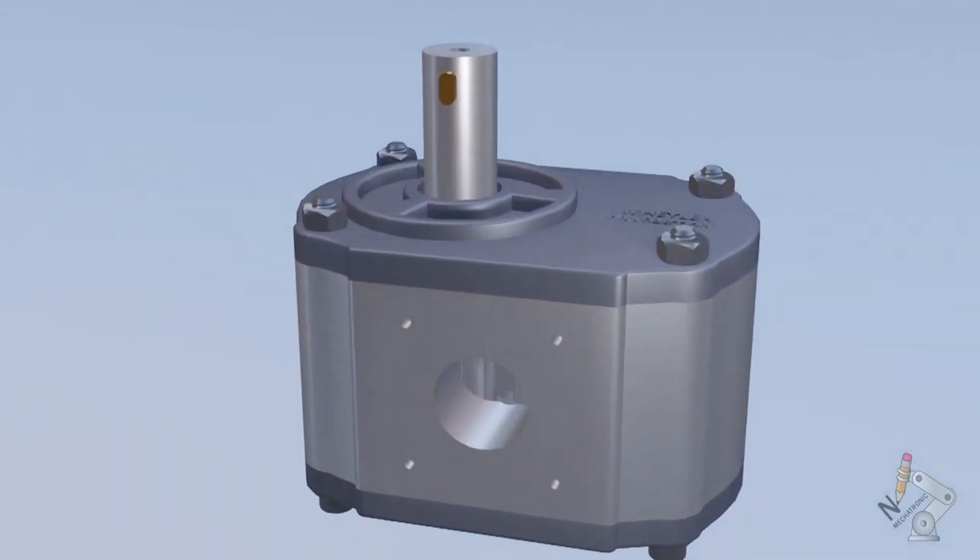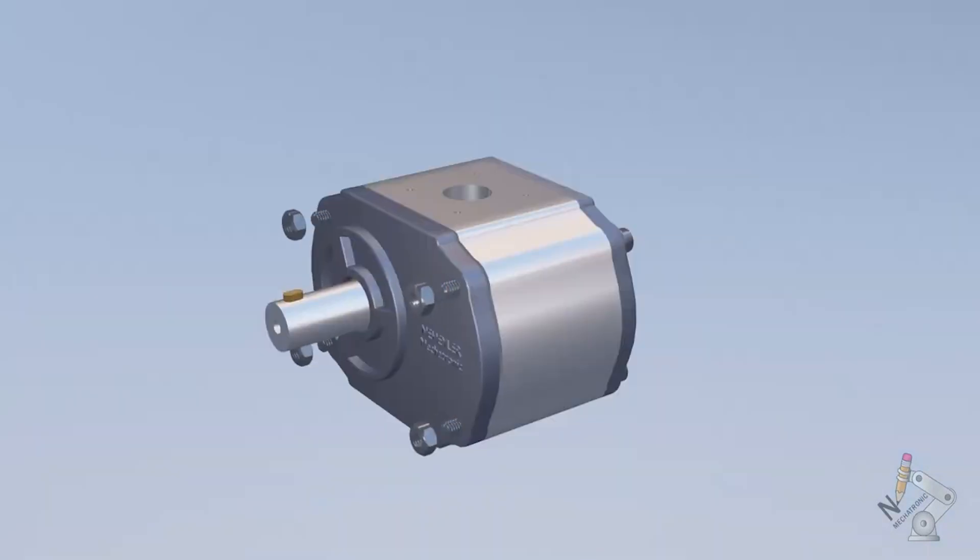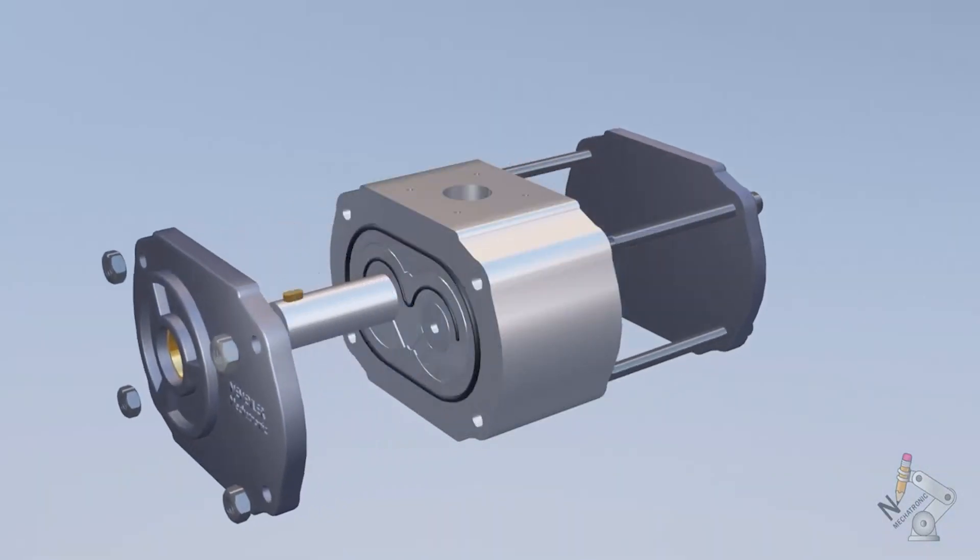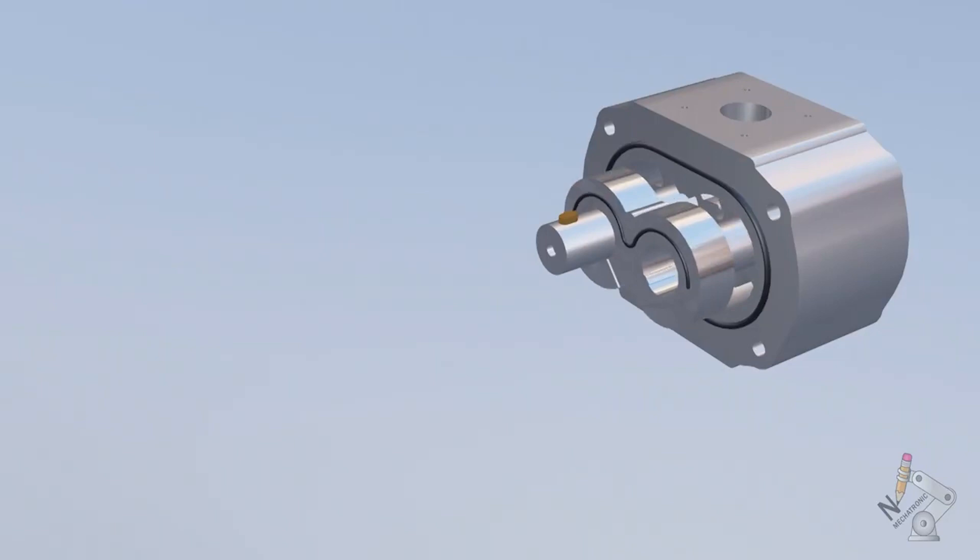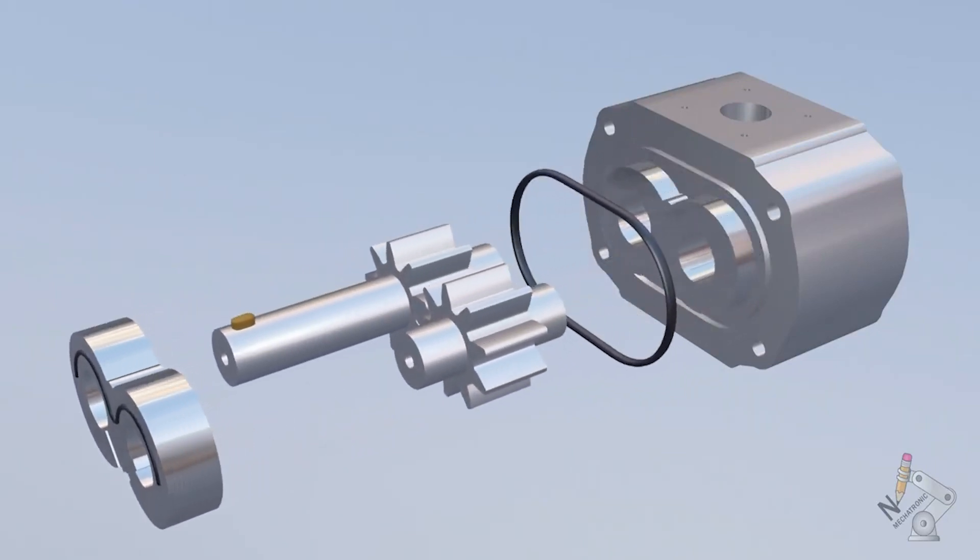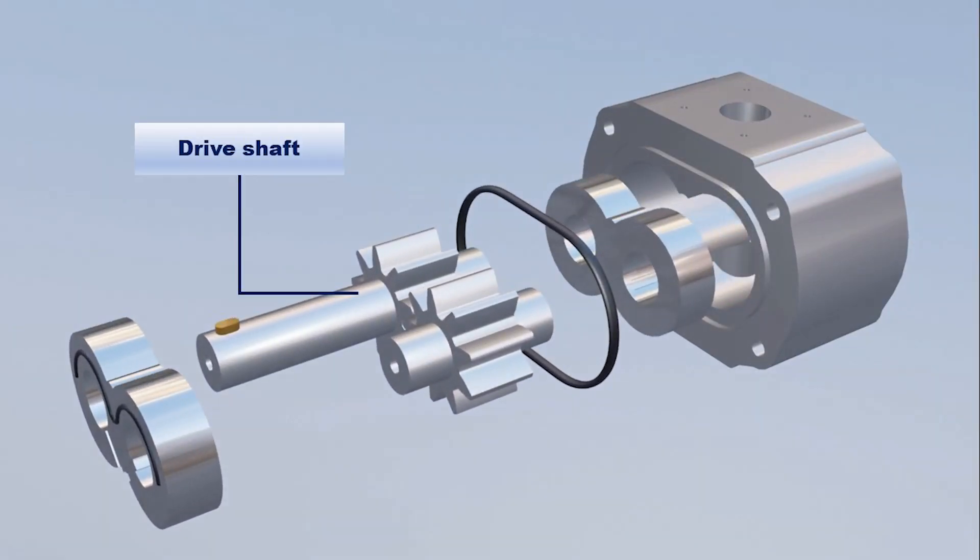External gear pump. External gear pumps are a type of positive displacement rotary pump. Let's quickly see some of the elements that compose it. Drive shaft is attached to its respective gear wheel. This shaft is the one that must be coupled to a motor, which can be an electric or combustion engine, which is responsible for supplying the rotary movement to the drive gear.